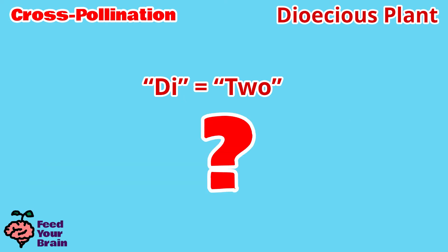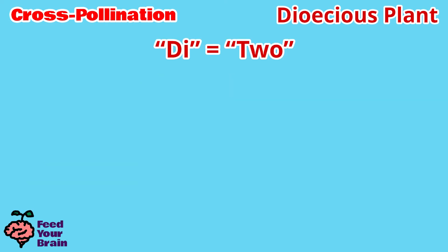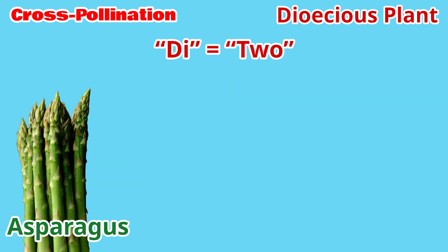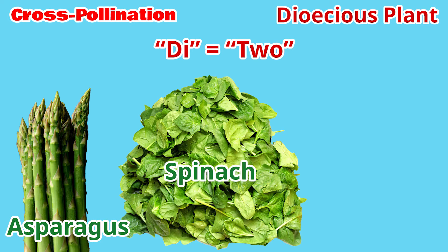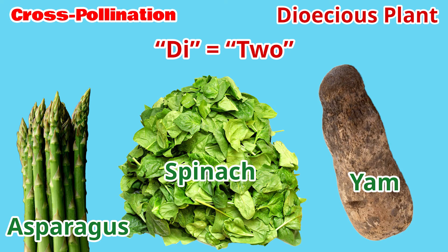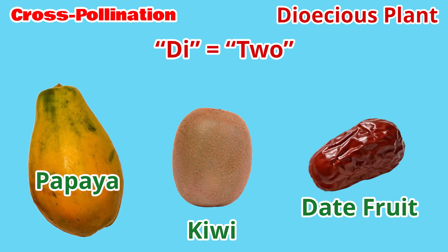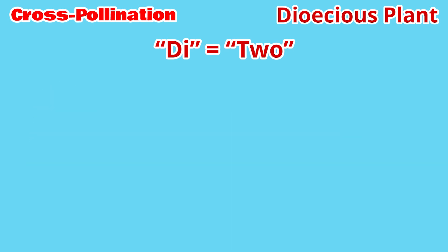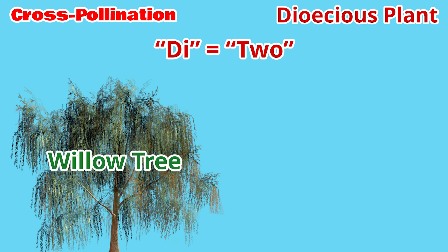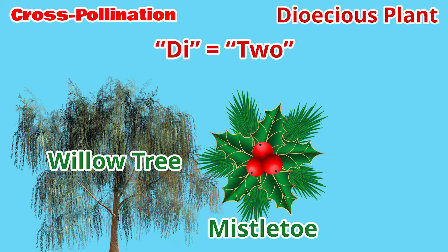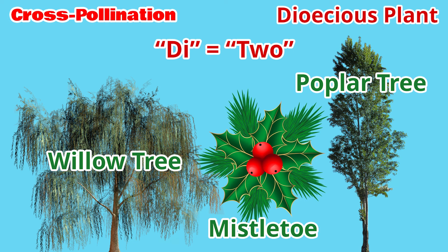What types of plants are dioecious? For vegetable-bearing plants: asparagus, spinach, and yam. For fruit-bearing plants: kiwi fruit, papaya, and date palm. Other examples of dioecious plants are willow trees, mistletoe, and poplar trees.